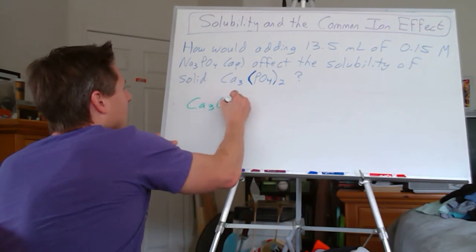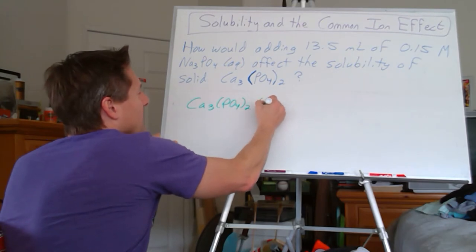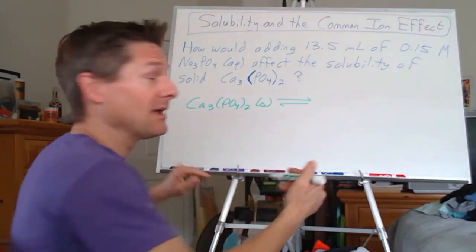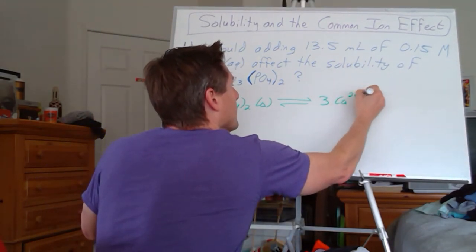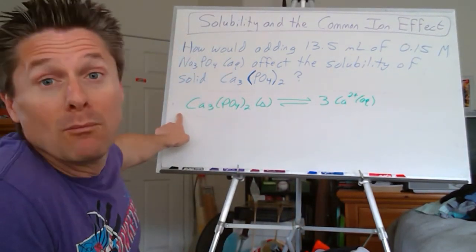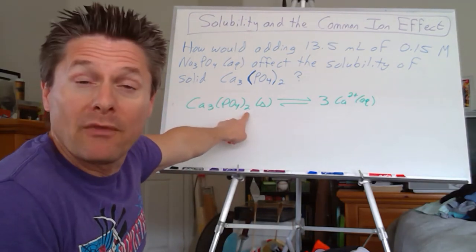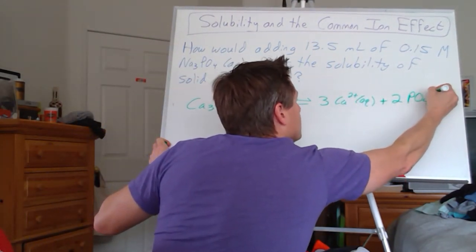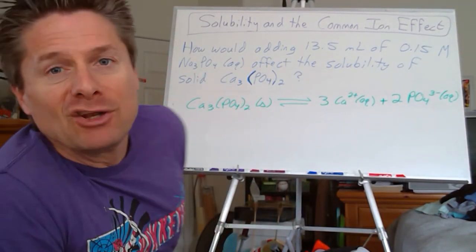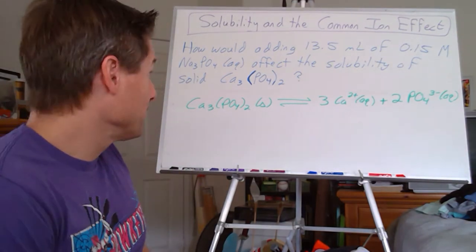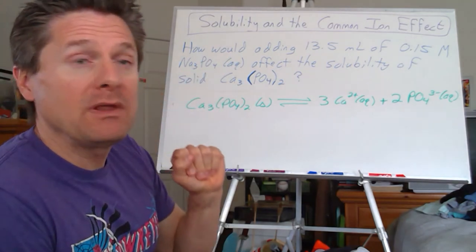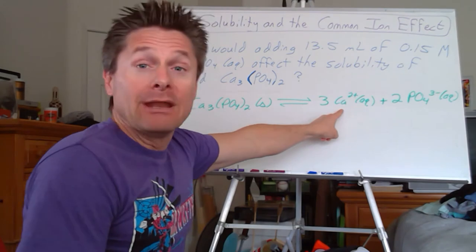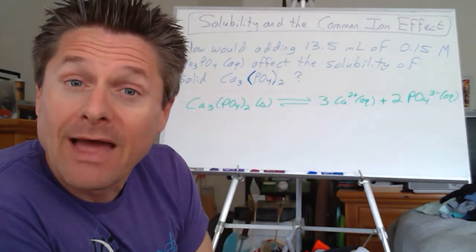So let's say we've got this question: how would adding 13.5 milliliters of a 0.15 molar sodium phosphate solution affect the solubility of solid calcium phosphate? Let's draw that equilibrium. Calcium phosphate has three calcium ions for every two phosphate ions — those will dissolve and dissociate reversibly. The subscript of three for calcium becomes a coefficient of three on the product side: three moles of calcium ions. The subscript of two outside the phosphate parentheses gives us two moles of phosphate ions on the product side. For this problem we don't need the Ksp value since we're not quantitatively calculating anything.